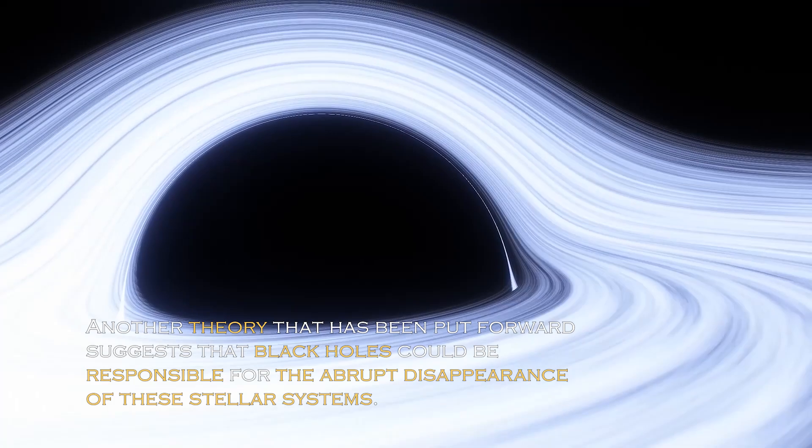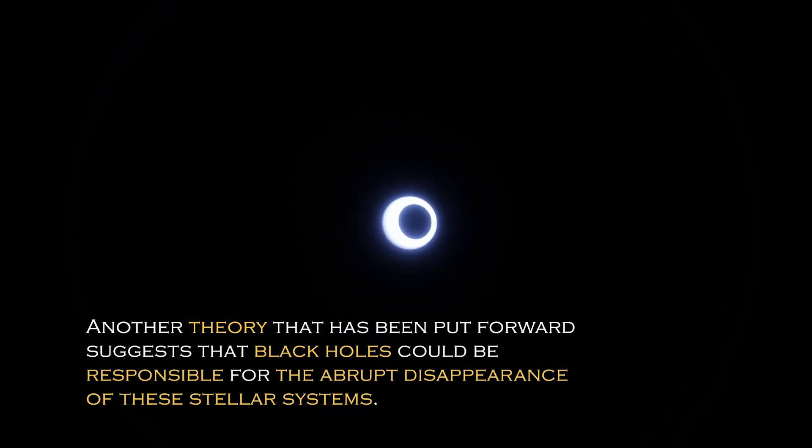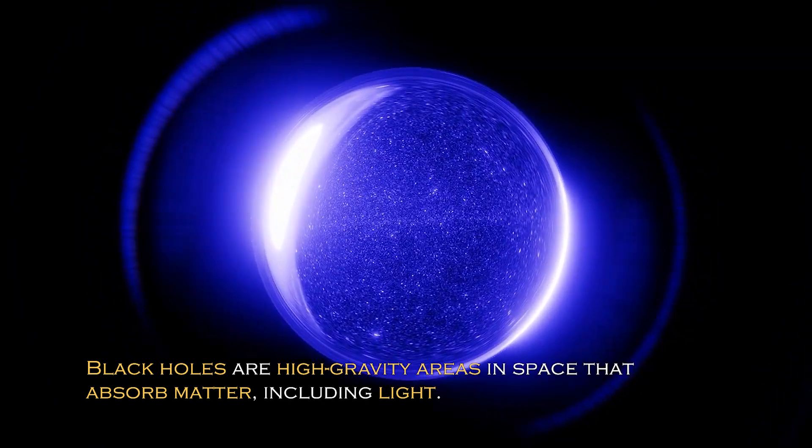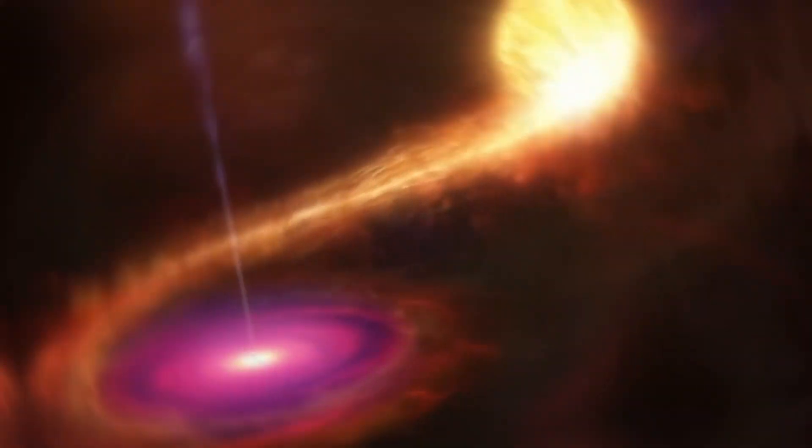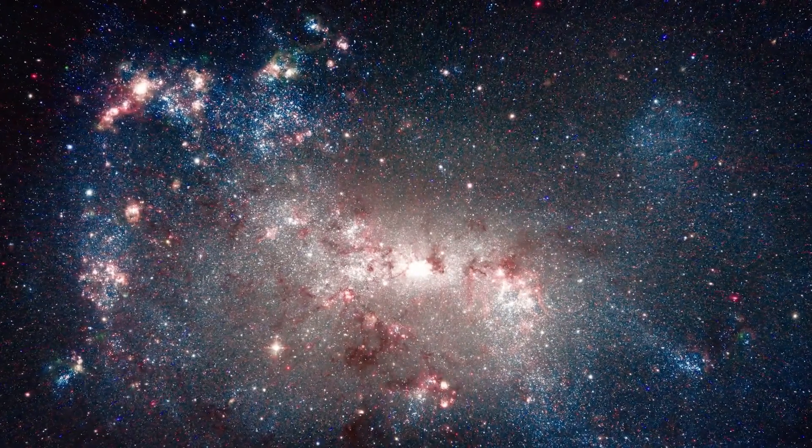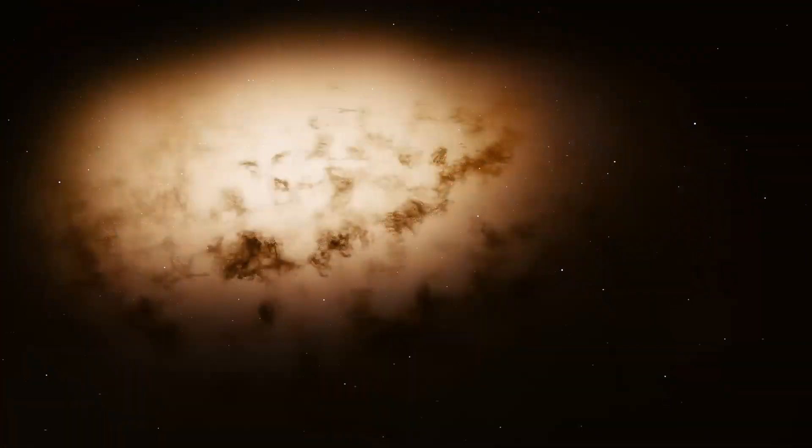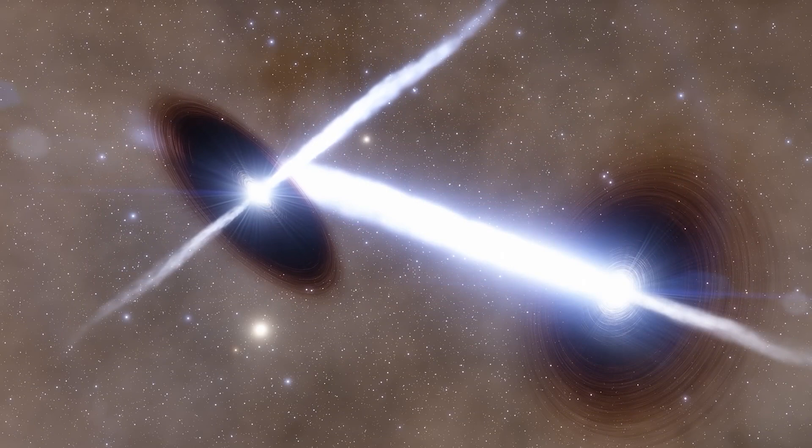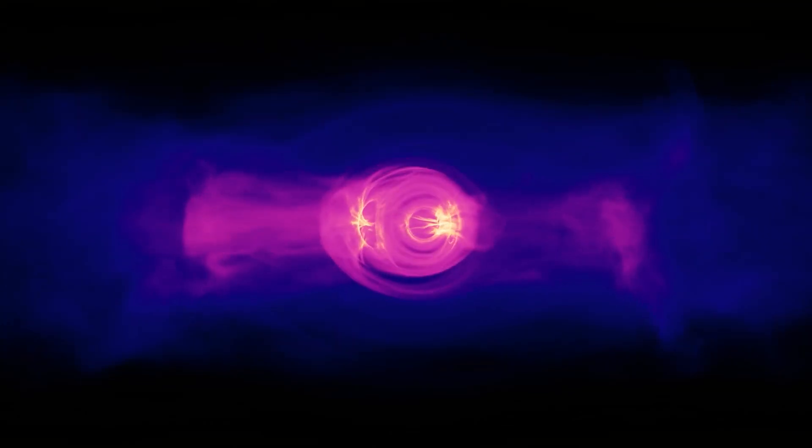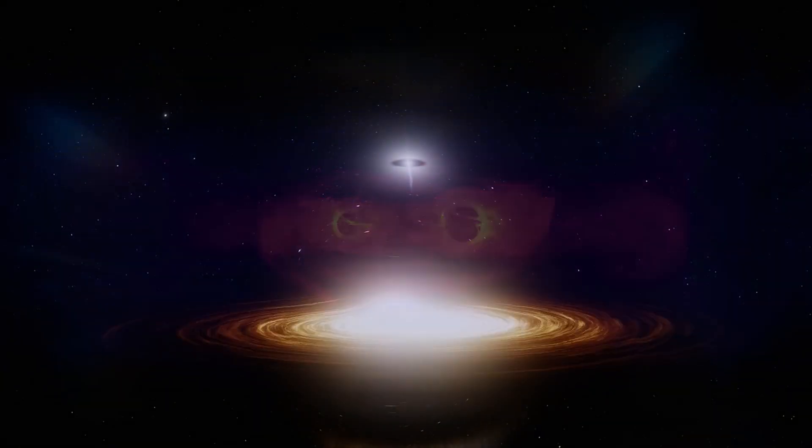Another theory that has been put forward suggests that black holes could be responsible for the abrupt disappearance of these stellar systems. Black holes are high-gravity areas in space that absorb matter, including light, and are sometimes absorbed consuming entire stars. However, the theory of black holes as the cause of the massive disappearance of trillions of stars seems unlikely. It would require an excessive number of black holes to eliminate such a huge number of stars, which does not seem logical or consistent with what we know about these astronomical phenomena.